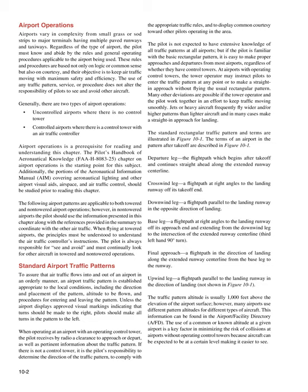At airports with operating control towers, the tower operator may instruct pilots to enter the traffic pattern at any point or to make a straight-in approach without flying the usual rectangular pattern. Many other deviations are possible if the tower operator and the pilot work together to keep traffic moving smoothly. Jets or heavy aircraft frequently fly wider and/or higher patterns than lighter aircraft and in many cases make a straight-in approach for landing. The standard rectangular traffic pattern and terms are illustrated in Figure 10-1.